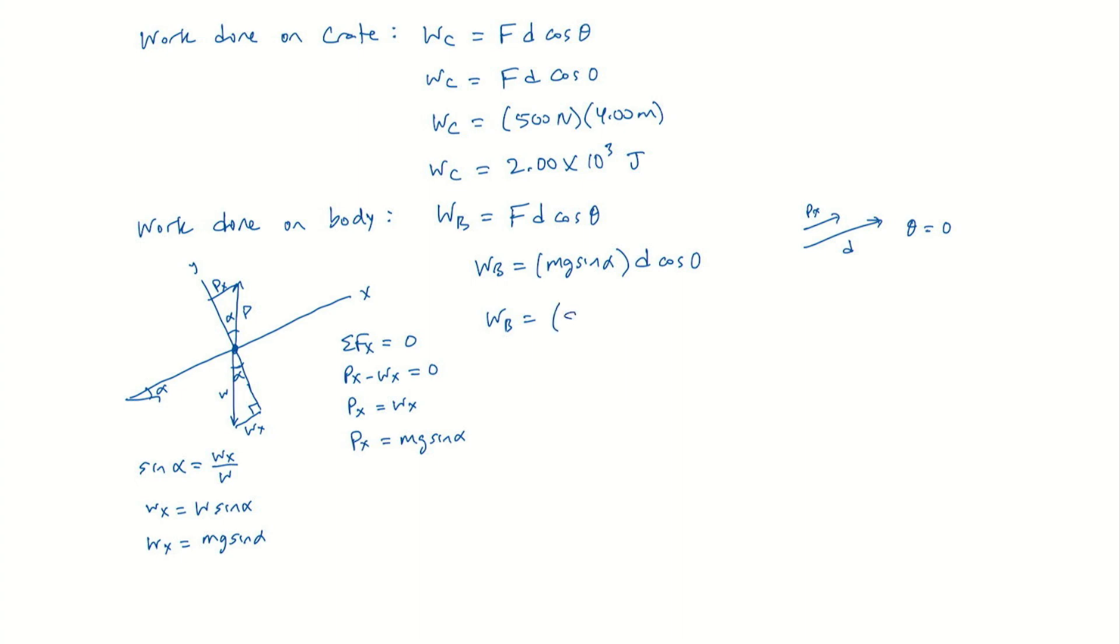The M is 85.0 kilograms. G is 9.8 meters per second squared. We have the sine of 20 degrees. And then we have the displacement. We're going to assume the body goes the same distance that the crate does, and that will be the 4.00 meters. So the work done on the body ends up being 1.14 times 10 cubed joules.